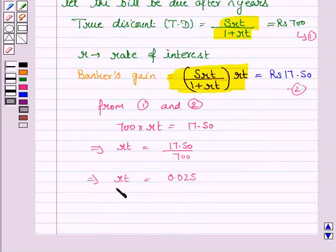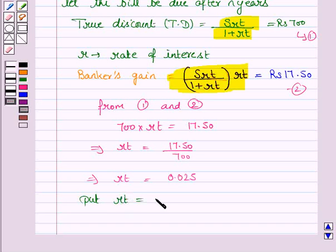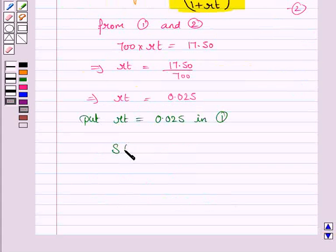Now we'll substitute the value of RT in equation 1. Put RT equal to 0.025 in equation 1. So we have S into 0.025 upon 1 plus 0.025 is equal to 700.